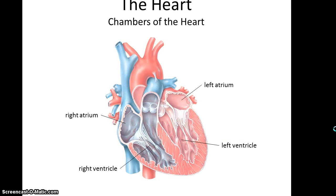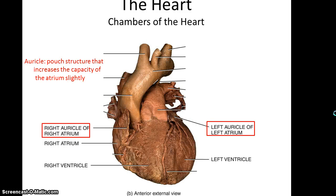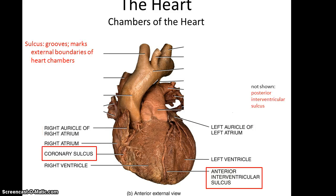The heart has four chambers: a right atrium, a right ventricle, a left atrium, and a left ventricle. Looking on the surface of the heart, you also see two flap-like structures associated with the atria called the auricles — patch-like structures that increase the overall volume of each atria slightly. There are also grooves along the heart that mark the external boundaries of the chambers: the coronary sulcus goes all the way around showing the separation between the atria and ventricles, and then the anterior and posterior interventricular sulci show the separation between the right and left ventricles. Within these sulci you find blood vessels, fatty tissue, and so forth.